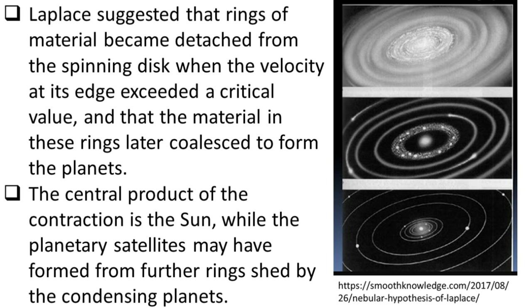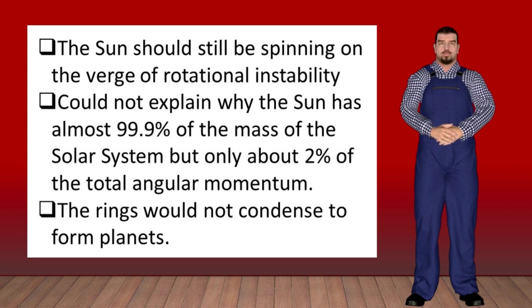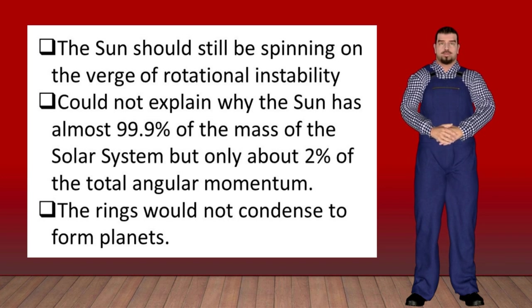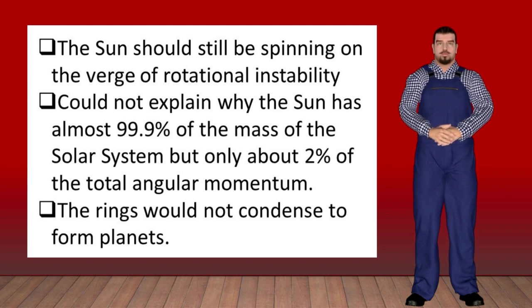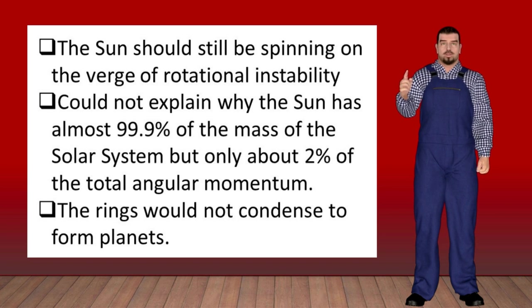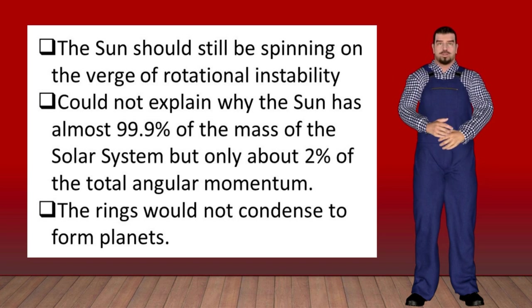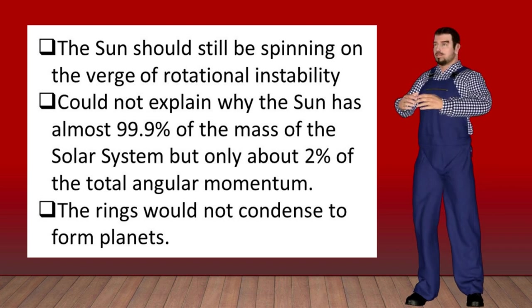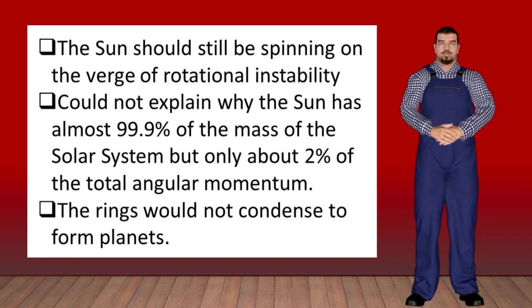The hypothesis, popular throughout the 19th century, went out of favor. The main problem was that it indicated that the sun should still be spinning on the verge of rotational instability. It could not explain why the sun has almost 99.9% of the mass of the solar system but only about 2% of the total angular momentum. In addition, calculations showed that the rings would not condense to form planets. However, in a modified form, it is the basis of most modern ideas for the formation of the sun and planets.